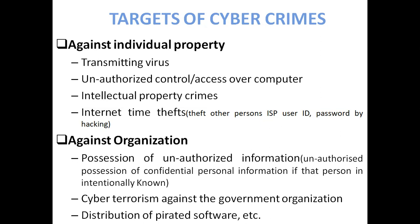Against the organization — you can see here possession of unauthorized information means unauthorized possession of confidential personal information if that person is internationally known. Suppose someone is leaking confidential personal information about a reported person. This is also a kind of cybercrime against the organization. Cyber terrorism is also a kind of cybercrime against the government organization.